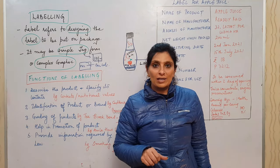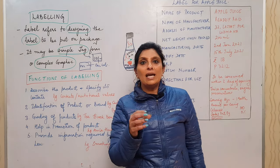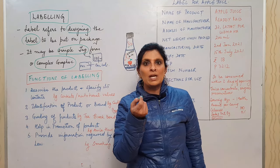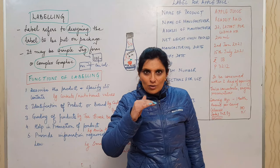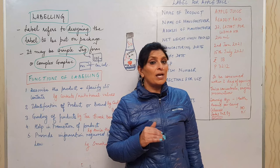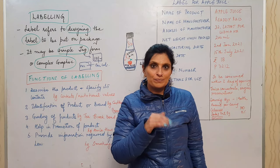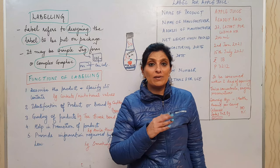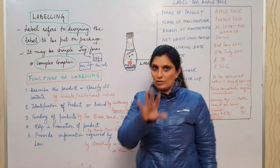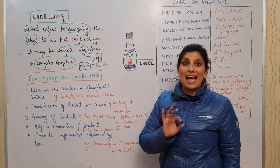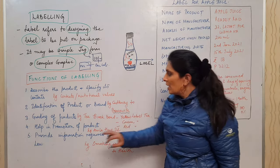Grading of product is another function of labeling. For example, Brooke Bond manufactures Yellow Label, Green Label, and Red Label teas. Yellow Label has full tea leaves, Green Label has slightly smaller leaves, and Red Label has granules. The label specifies the quality and grade of the product. So as per the quality, size, or classification of the product, the label grades it for the consumer.